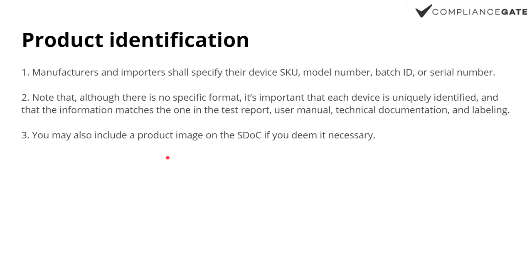Number one, you need product identification. You need to specify the device SKU, model number, batch ID, serial number — anything that can identify the product and tie it to the supporting documentation. When it comes to formats, it tends to be open-ended, as long as it can be identified. You could also include a product image.